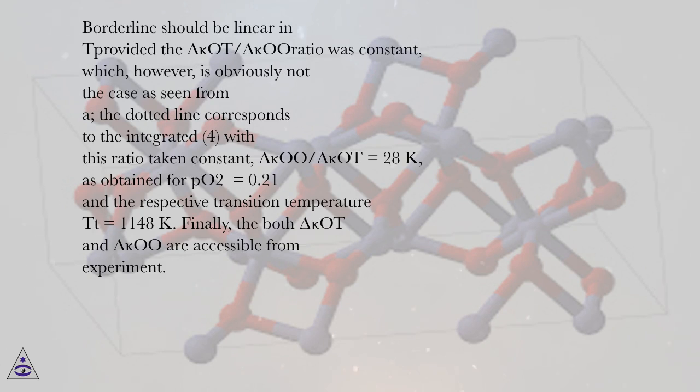And thus the borderline should be linear, provided the Δκₒ/Δκₒ ratio was constant, which, however, is obviously not the case as seen from A. The dotted line corresponds to the integrated form with this ratio taken constant, Δκₒ/Δκₒ = 28K, as obtained for PO₂ = 0.21 at the respective transition temperature Tₜ = 1148K.